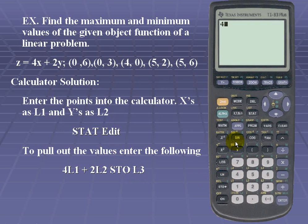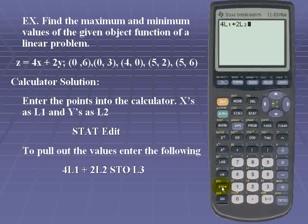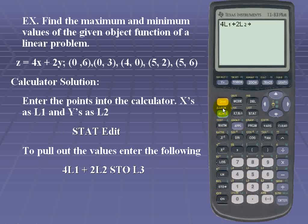So it's 4 times list 1. List 1 is second and 1 plus 2 times list 2. We're going to store all of that in list 3.